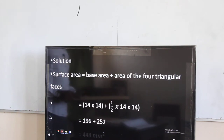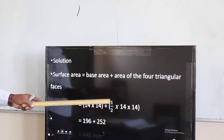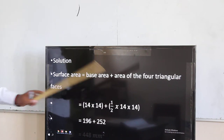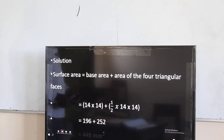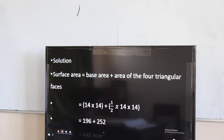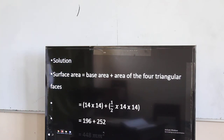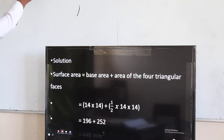Then we have the triangle: it is a half times base multiplied by height. Our base is 14 and our height is also 14, then we multiply by 4, giving us 252. So if you take the sum of the two — that is 196 (area of the base) plus 252 — you get the answer as 448 centimeters squared.